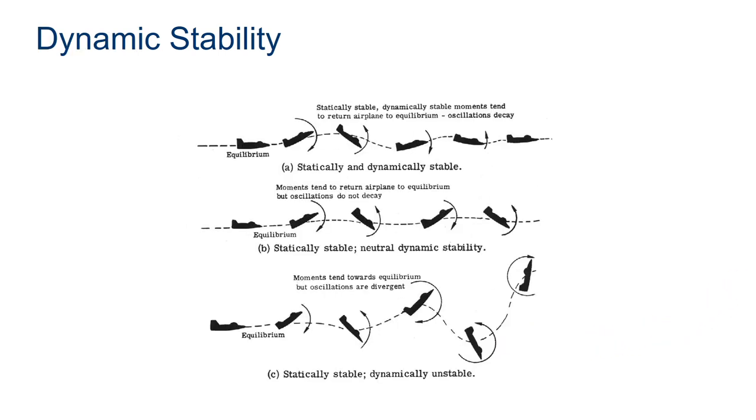Then we bring in dynamic stability, and this is how the stability is changing as it moves through the air. And we have statically and dynamically stable. So what this means is the plane may be disturbed and it oscillates, but that oscillation goes away.